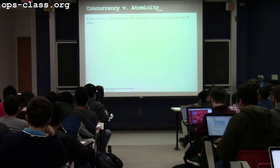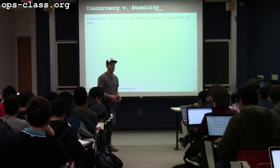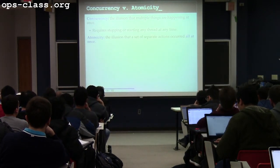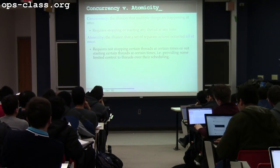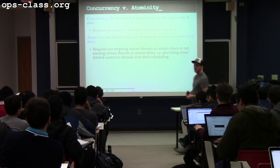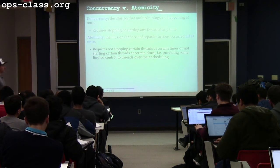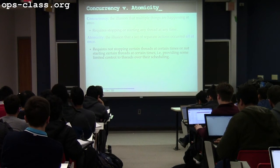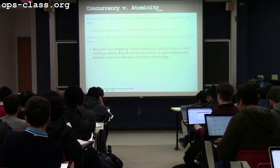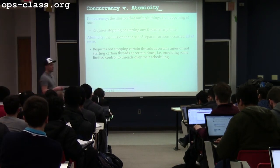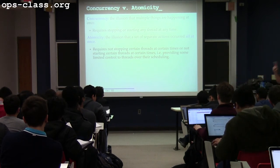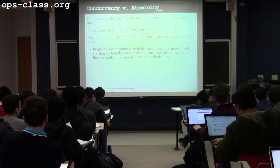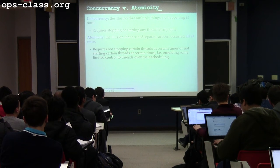One of the ways we fight problems with concurrency is through another illusion called atomicity. Atomicity is the illusion that a bunch of things that actually require multiple operations happen all at once. In order to achieve atomicity, we have to manipulate the order in which threads run — either stopping certain threads at a particular time or not starting threads at other times. The ways we solve these synchronization problems always involve using synchronization primitives to build more control into the situation.